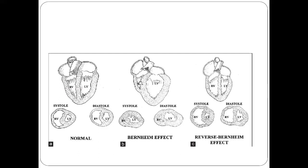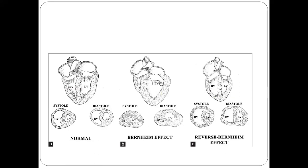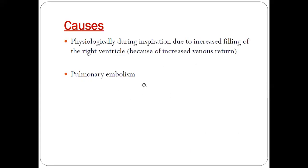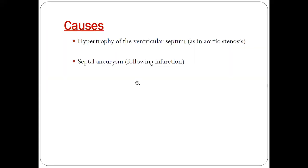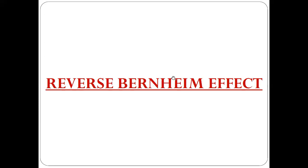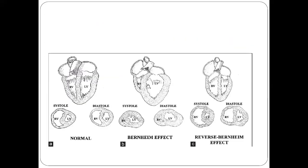The Bernheim effect is commonly seen wherever there is increased hypertrophy of the left ventricle, as seen in aortic stenosis, or severe concentric hypertrophy as seen in HOCM. Whenever there is increased pressure in the left ventricle, this causes the Bernheim effect. Hypertrophy of the ventricular septum as in aortic stenosis is also seen in septal aneurysm. If there is infarction of the septum due to myocardial infarction and there is an aneurysm of the septum,